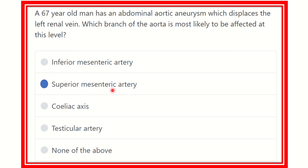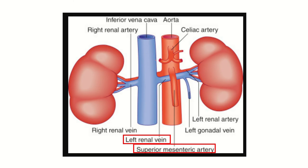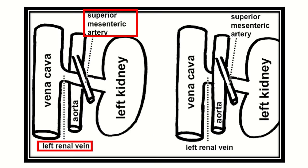Our answer is the superior mesenteric artery. This superior mesenteric artery is a branch of the abdominal aorta and may be affected due to the abdominal aortic aneurysm that displaces the left renal vein. If the aneurysm displaces the left renal vein, it will affect the superior mesenteric artery.